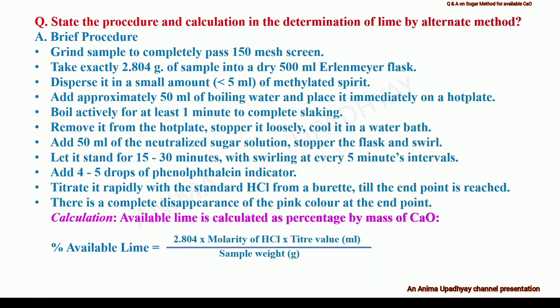The calculation is simple. The available lime is calculated as percentage by mass of calcium oxide and is given by the formula: 2.804 × molarity of hydrochloric acid × titer value in ml at the end point (burette reading at end point) / weight of the sample taken in grams. What is methylated spirit? The methylated spirit is rectified spirit when mixed with 5 to 10% methanol — it becomes methylated spirit, that is, denatured spirit.